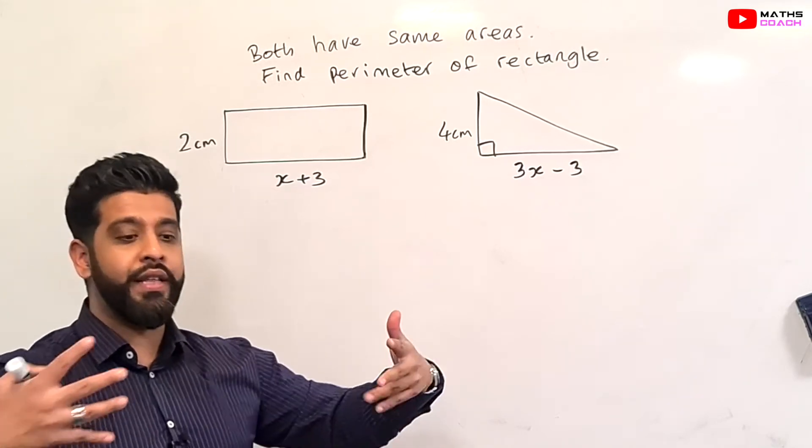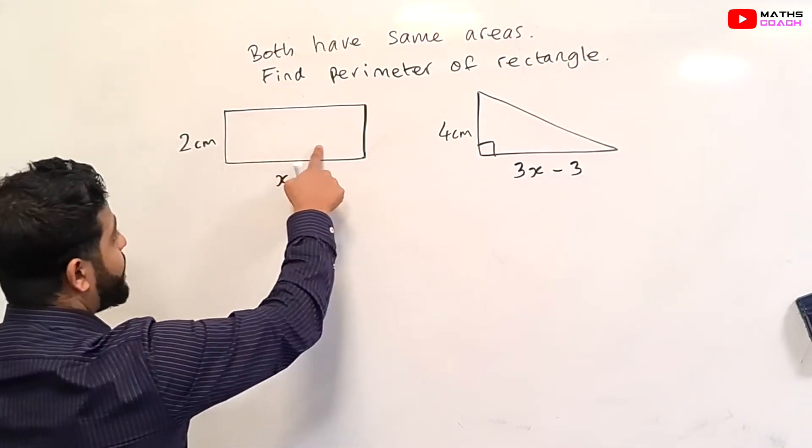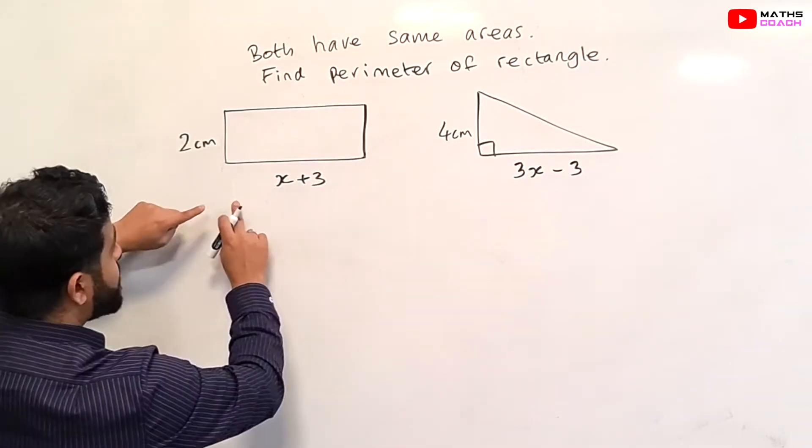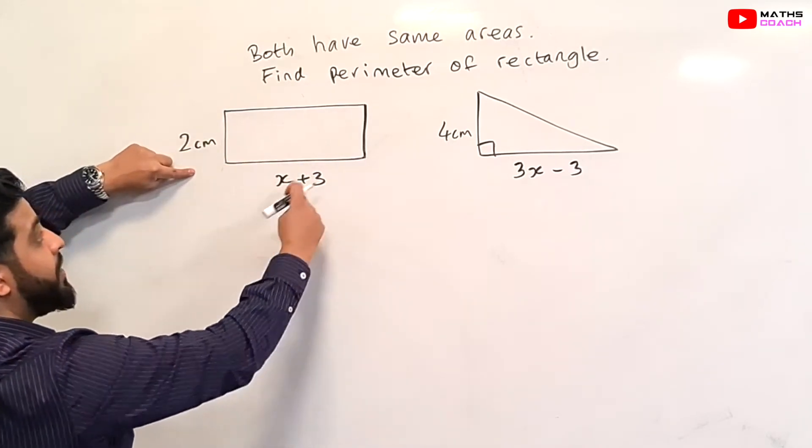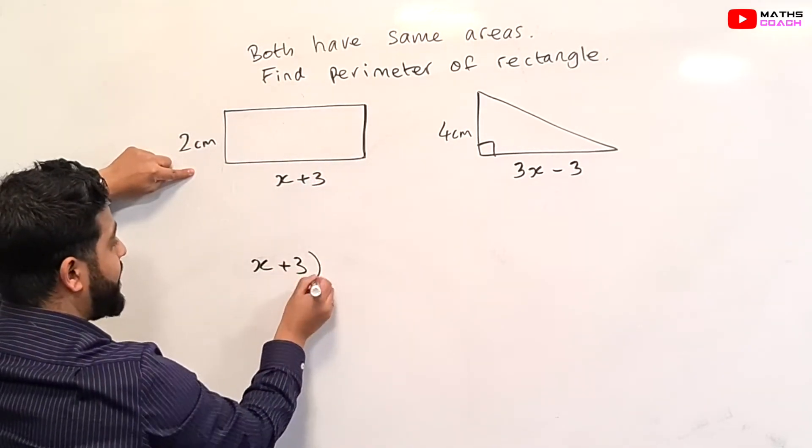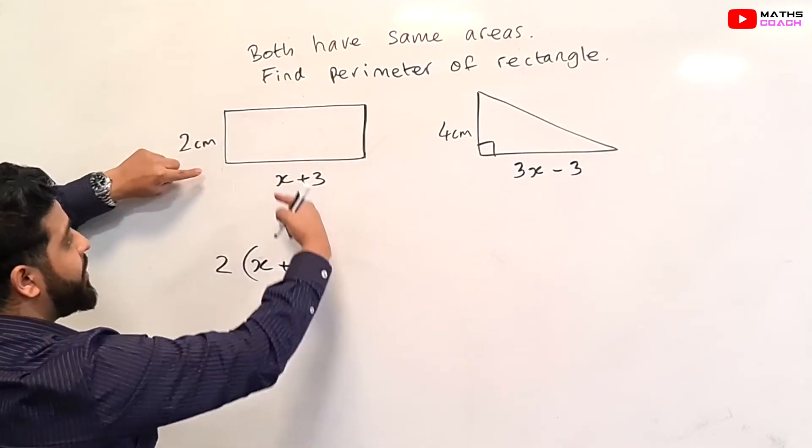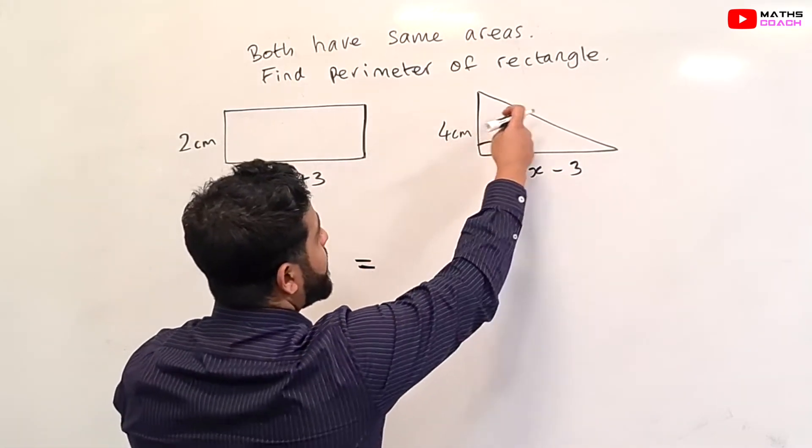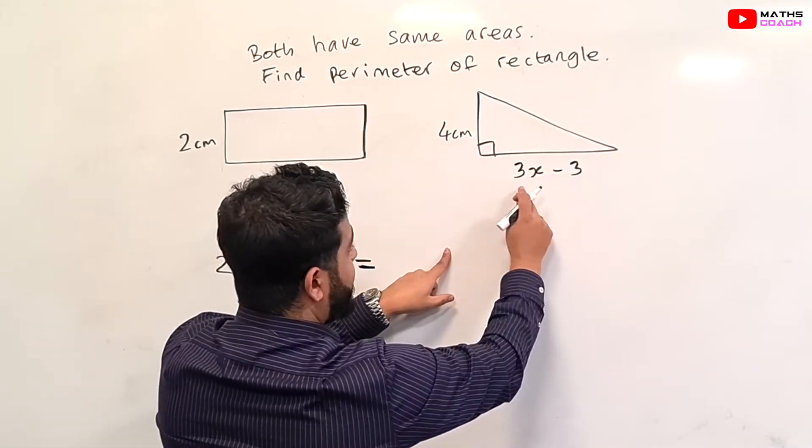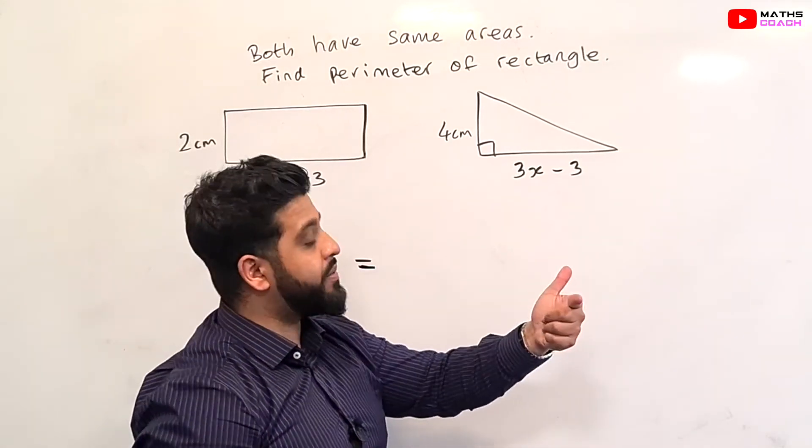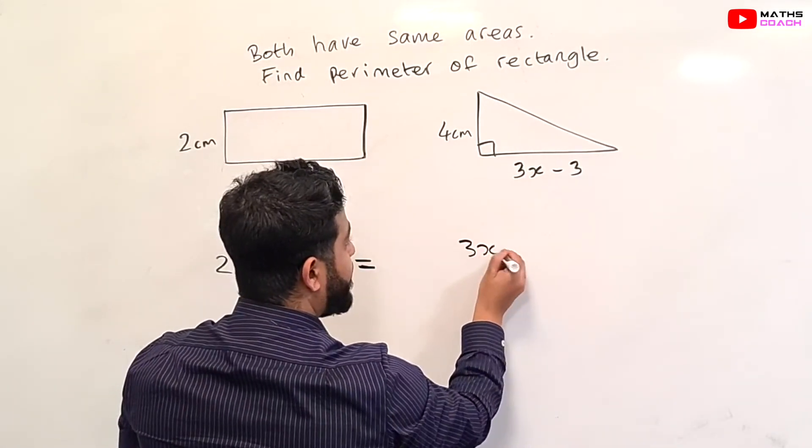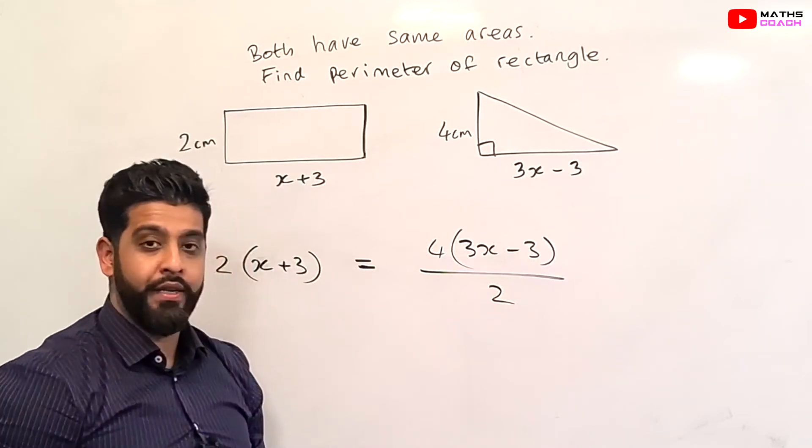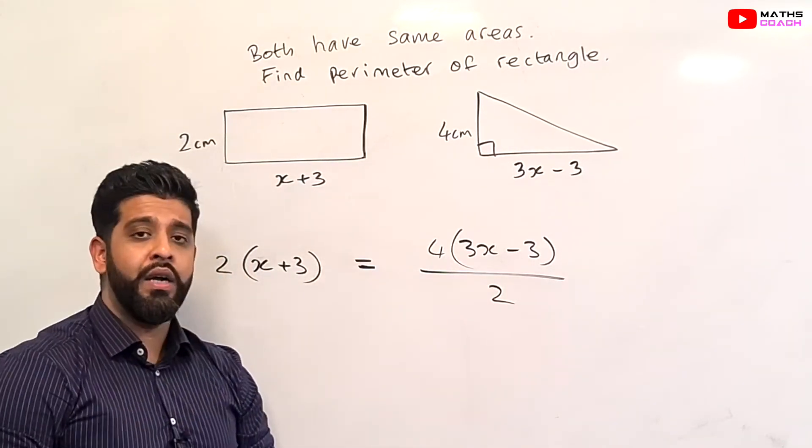Let's begin by equating the two areas. If we make the area of this rectangle equal to the area of this triangle, we can make an equation. Length times width gives us the area of the rectangle. So X plus 3 times 2 represents the area of this rectangle. That equals the area of the triangle. The area of a triangle is base times height divided by 2. So the base here is 3X minus 3 times the height, divided by 2.